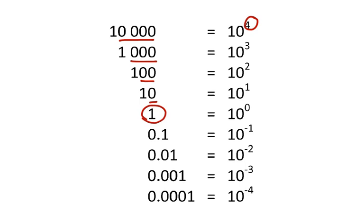Notice that as we get into decimal numbers, our values become negative. Our exponents become negative. We'll look at small numbers in just a moment. Let's start off by looking at really large numbers and how to write them in scientific notation.